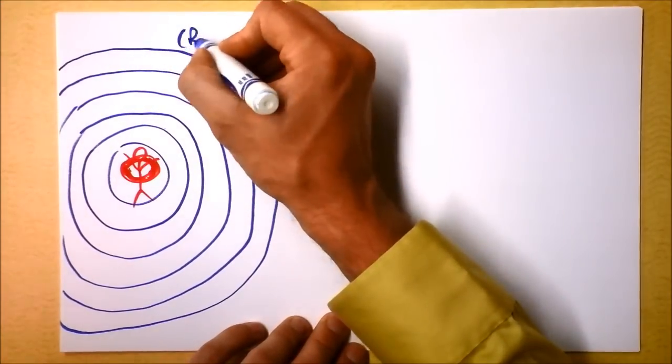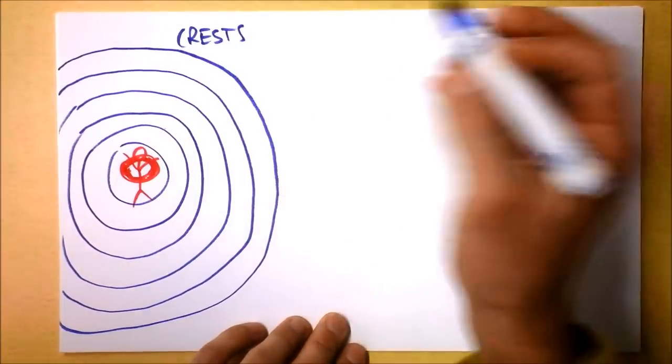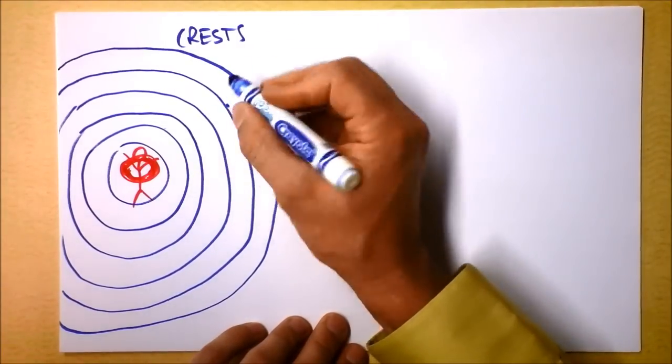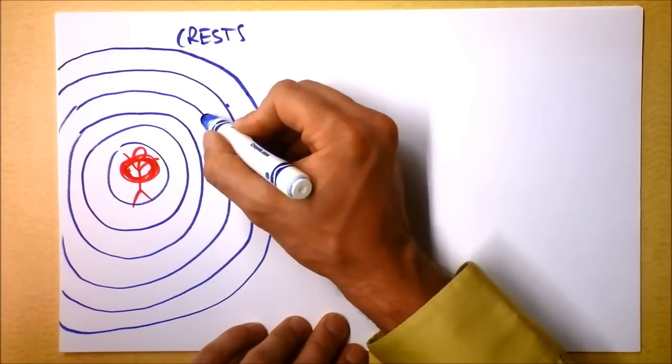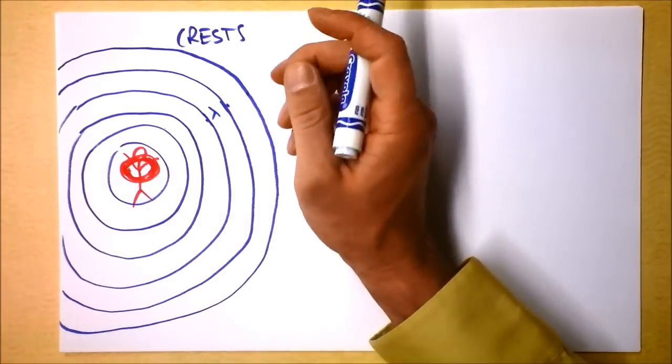Let's say that these are the crests. If these are the crests of our waves, then we've got a crest here, crest here, crest here, and the distance between two crests, what do you want to call that? Well, let's call it lambda.